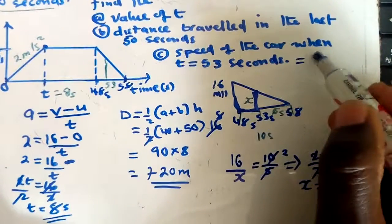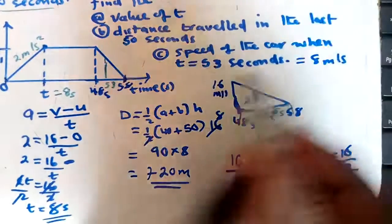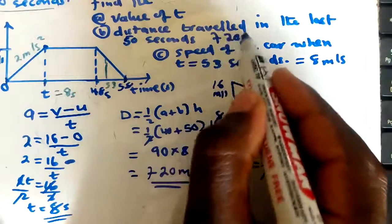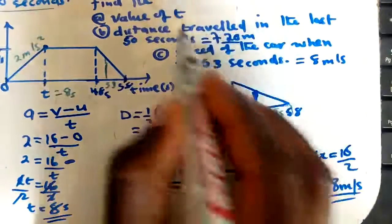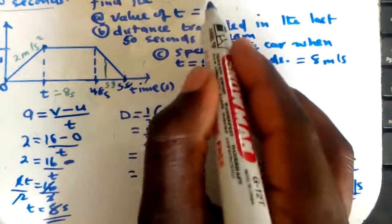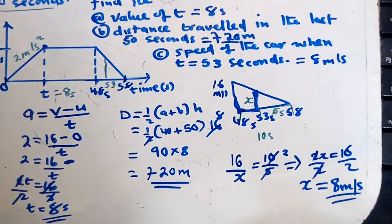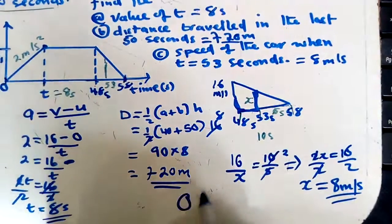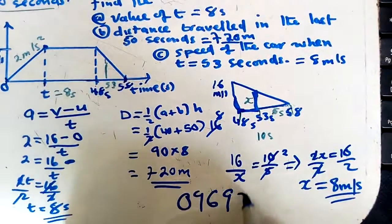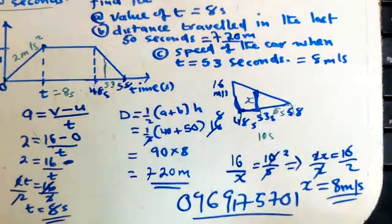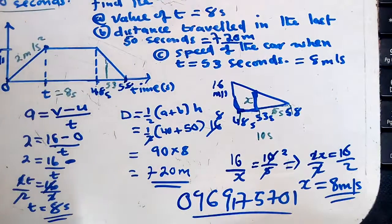So to summarize: the speed at t = 53 seconds is 8 meters per second, the distance traveled in the last 50 seconds is 720 meters, and the value of t is 8 seconds. Thank you very much for watching — subscribe to the channel, and you can send your requests to 0969175701.